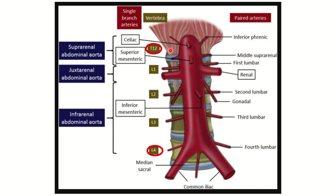The abdominal aorta descends down and finally bifurcates at the level of the fourth lumbar vertebra, as we can see here.